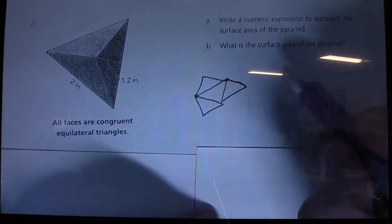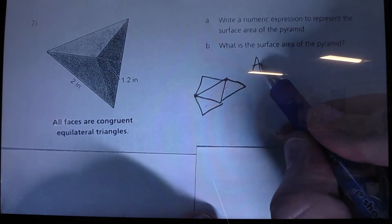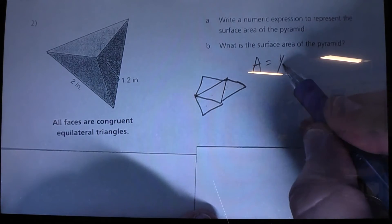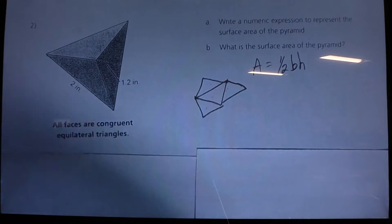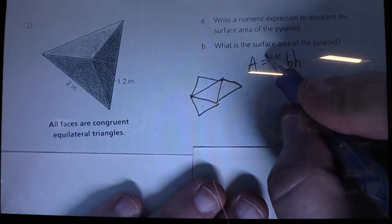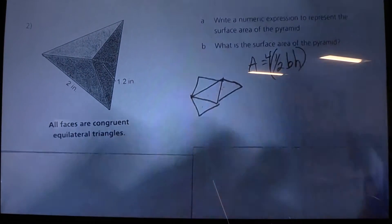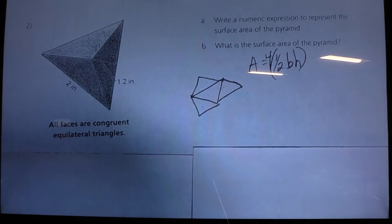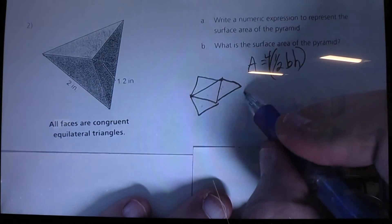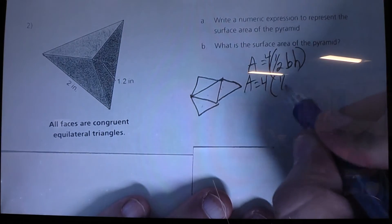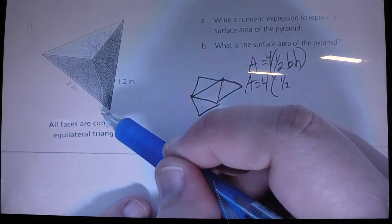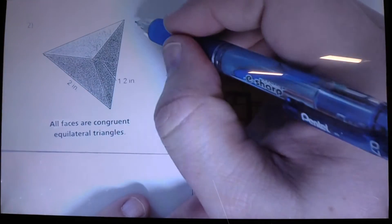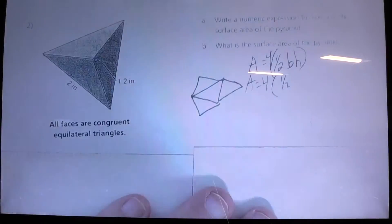And the formula for finding the equilateral triangle surface area is area equals half the base times the height. Now, if I have 4 of these, I can just simply say 4 times half the base times the height. And if it tells us that the base is 2 inches, if it's 2 inches here, because they're all equilateral, then it's going to be 2 inches here, it'll be 2 inches here.